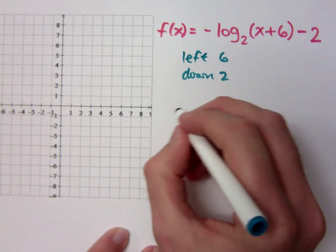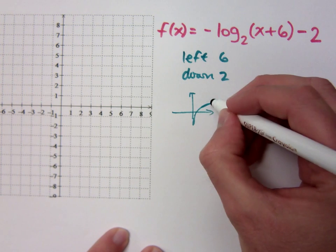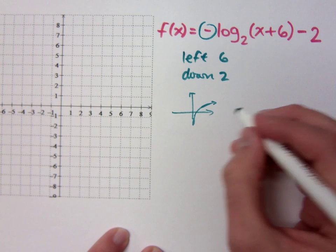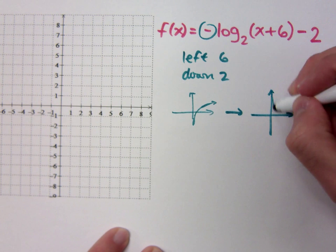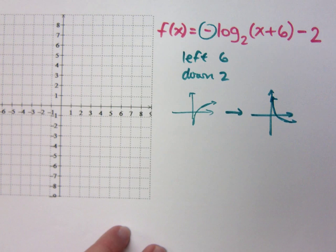The negative means I'm gonna be... My normal graph would do this. Normal graph does this, right? But when I put a negative here, it's gonna do what? It's gonna make it go upside down, like this.